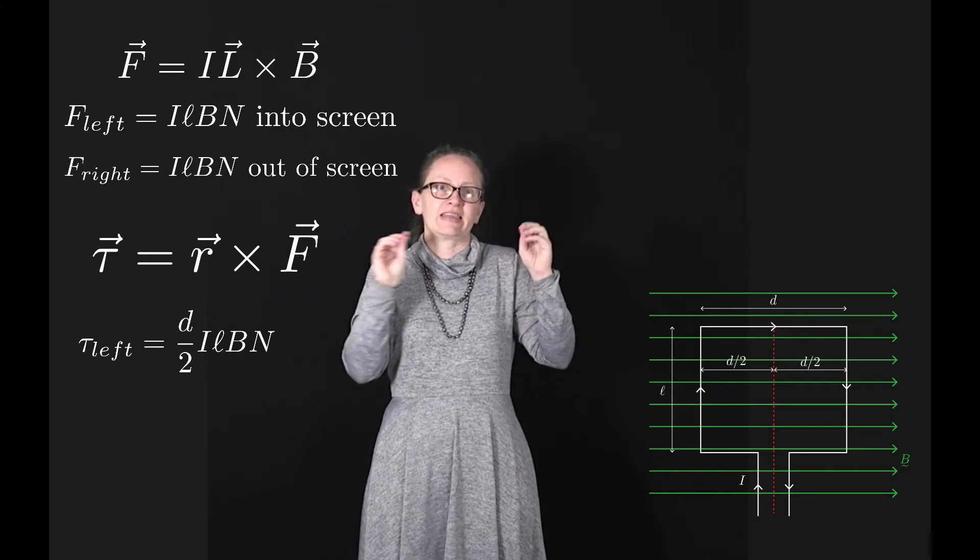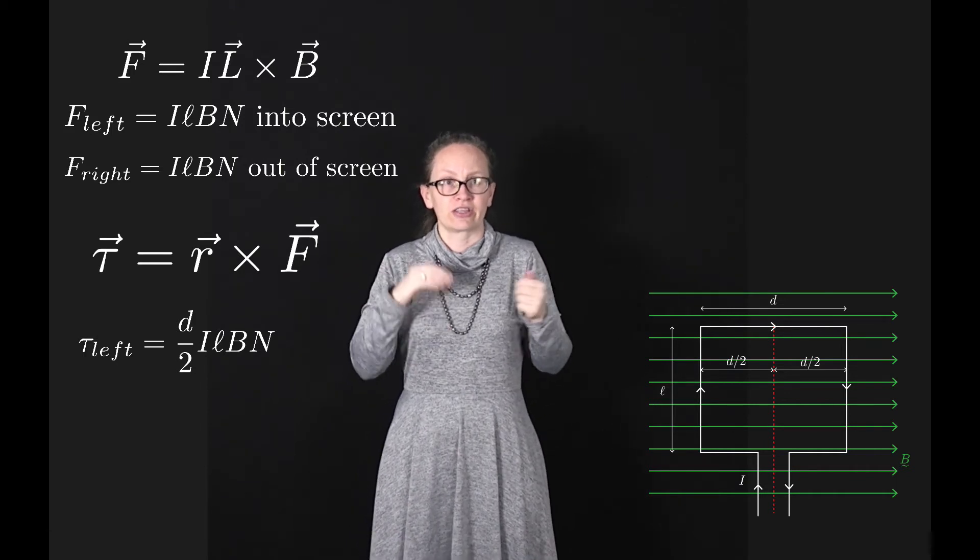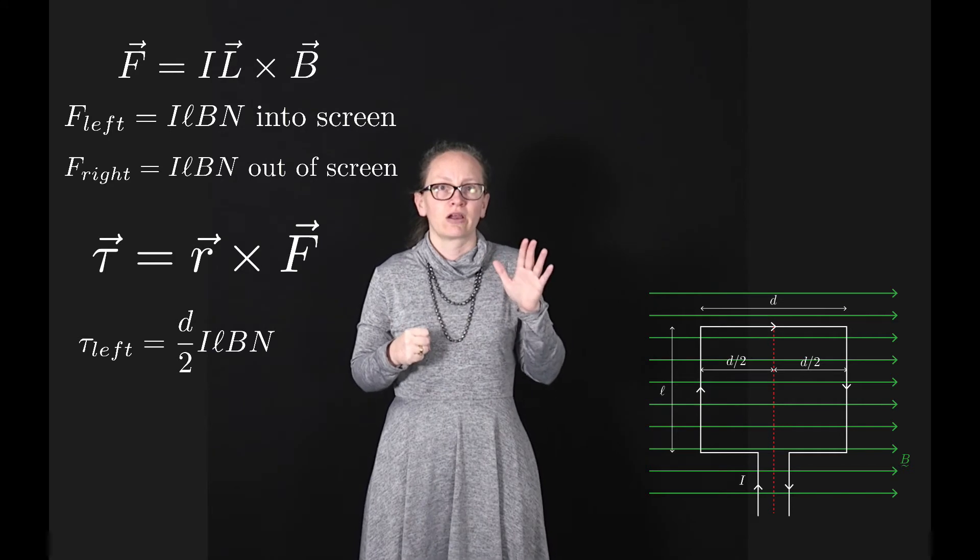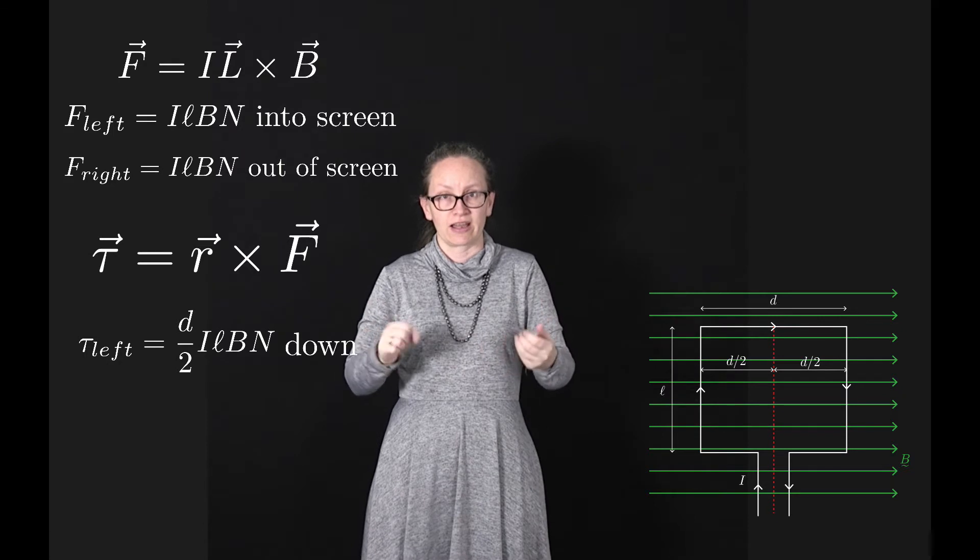In this case, the R vector and the F vector are perpendicular to each other. R is going to the left while the force is going into the page. With our right-hand rule, we can see that the torque is directed downwards on this side.